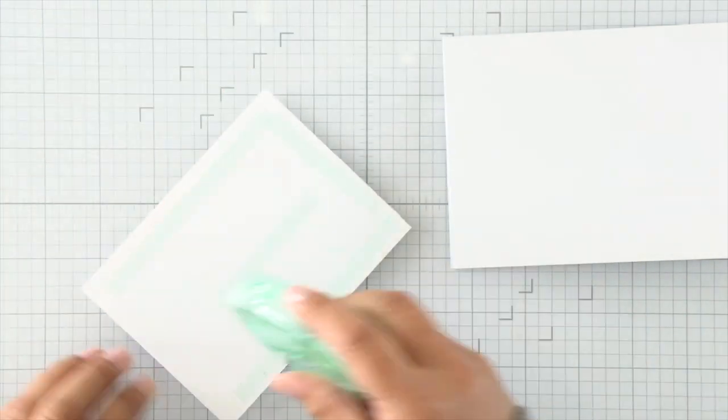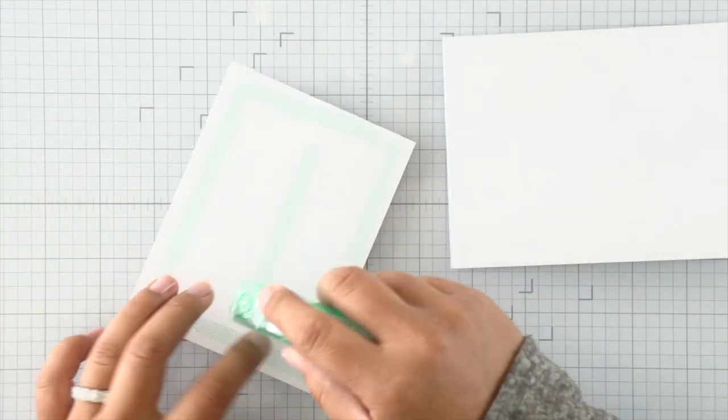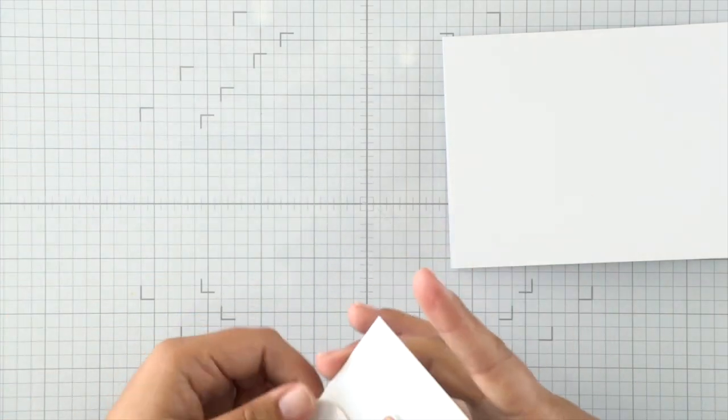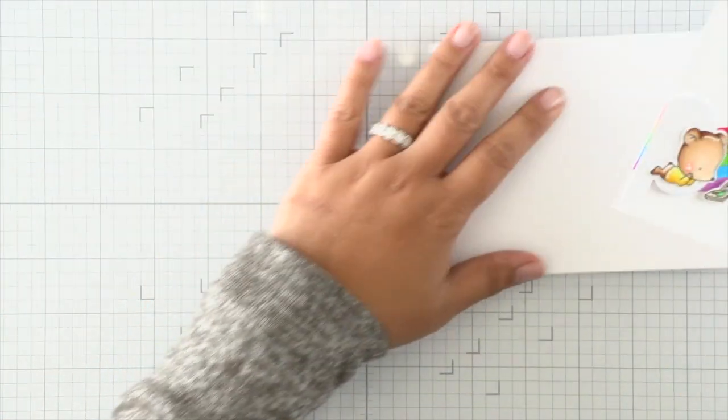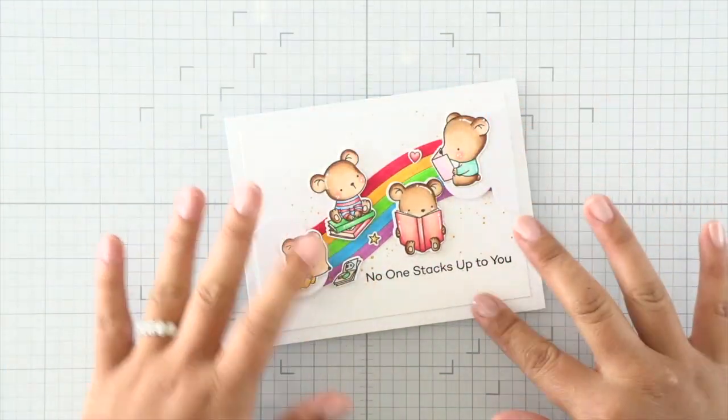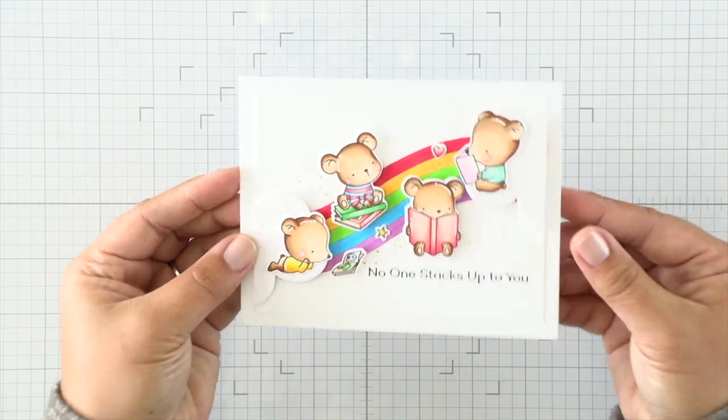All there's left to do is apply this over a card base. I have a white card base here to my right and I'm just adding some adhesive to the back of my card panel, and then we'll attach that. That finishes my reading rainbow card.